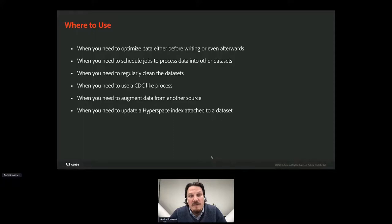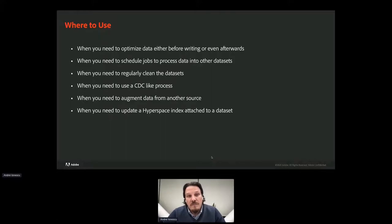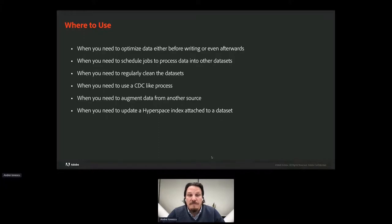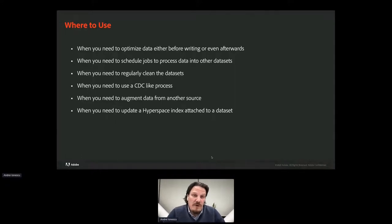For a change data capture process, you can have a tracking and triggering pattern with a tracker listening for new data landing, and start a copy-change process to duplicate changes from source to targets. Another use case is augmenting datasets by filling up empty fields — use this pattern to detect when new data lands and retrieve external information before writing the data. Lastly, if you have Hyperspace indexes attached to datasets, you need to update them when datasets change, since Hyperspace doesn't do that by itself — so you can listen for new data and trigger updates. This pattern is not limited to these use cases.